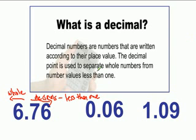So in our examples here, 6 is a whole number, and 1 is a whole number. And then 0.76 is less than 1, that's on the decimal side. 0.06 is on the decimal side, and 0.09 is on the decimal side.